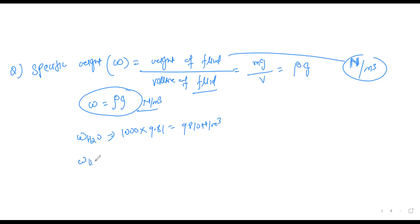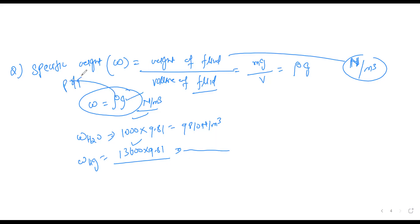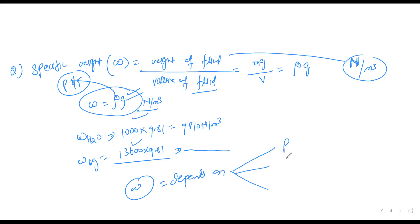Similarly, to find the specific weight of mercury: 13,600 × 9.81, which gives approximately 133,500 N/m³. So if you know the density, you can calculate the specific weight. The specific weight depends on three parameters: temperature, pressure, and g. Density depends on pressure and temperature, and there is also g. So if you know the relation between pressure and density, you can find the relation between specific weight and density.